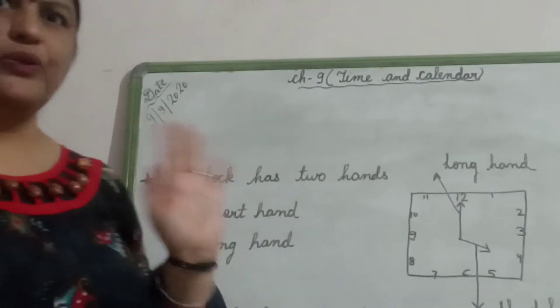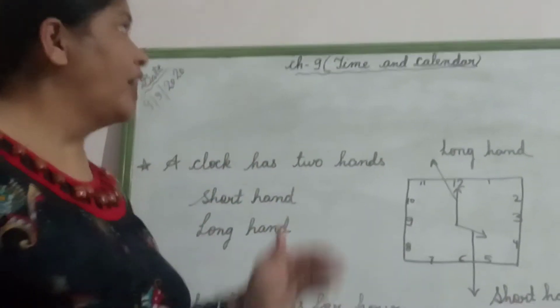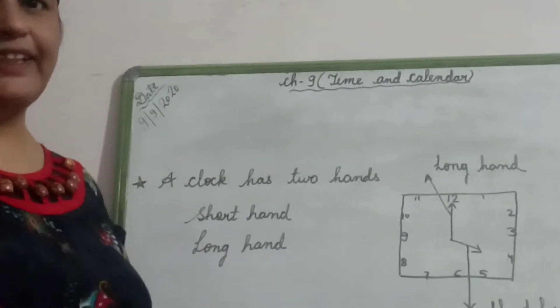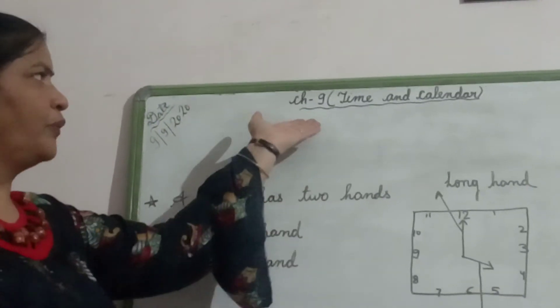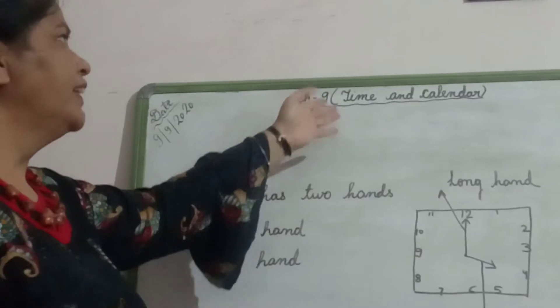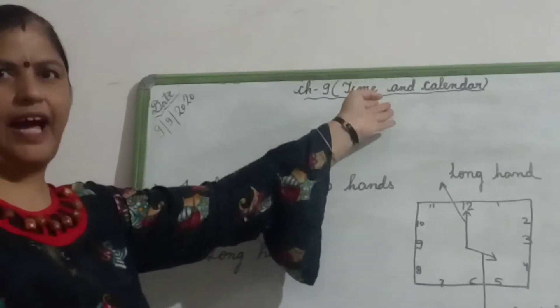Good morning children. How are you all? Fine? Great. Welcome back to Maths Online Class. Children, today we are going to start a new chapter, that is chapter number 9, Time and Calendar.